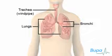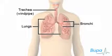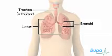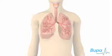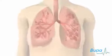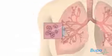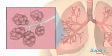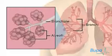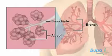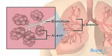The bronchi are large tubes which are found in the lungs. Air passes through the trachea and bronchi to the lungs when you breathe. The bronchi branch into narrower tubes called bronchioles. The smaller tubes are attached to tiny air sacs called alveoli.